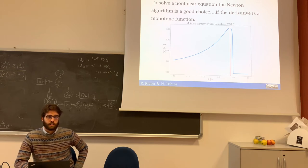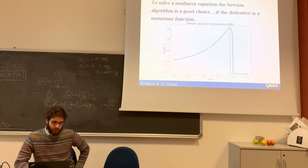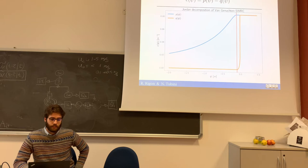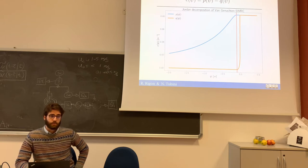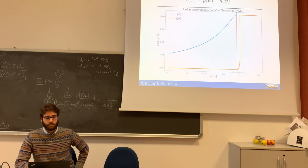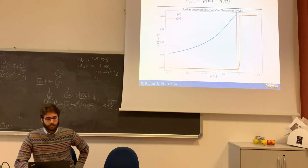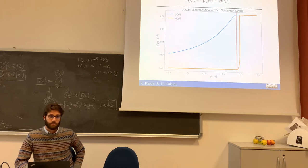The derivative of the water content is a non-monotone function, as shown in the plot. The idea is to define two other functions, p and q, which are both monotone, and their difference gives the original derivative of the water content. We can then apply the Newton algorithm twice — first using the p function, and second using the q function — ensuring that the method converges to our solution.